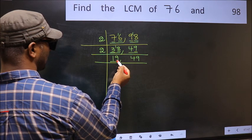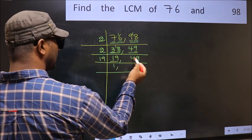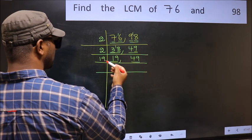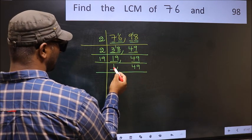Now here we have 19. 19 is a prime number so 19 once 19. The other number 49 not divisible by 19 so you write it down as it is. Now we got 1 here.